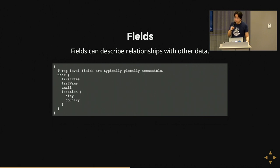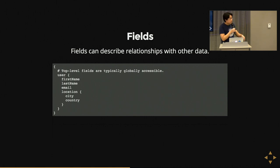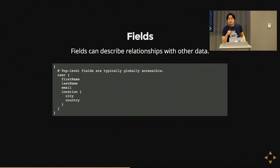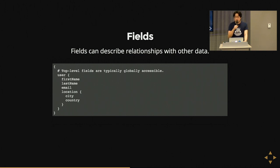Fields can also describe relationships with other data — you can have nested relationships and the rich hierarchical context I described earlier with the original example. There has to be some kind of argument that provides the ID for what you're fetching, and I'm getting there in just a second. All of this currently assumes there's a single thing to be selected; the next slide covers arguments.